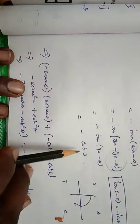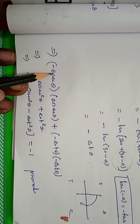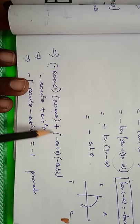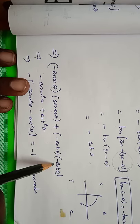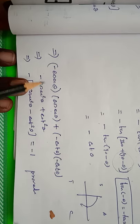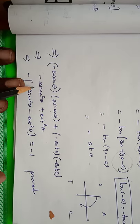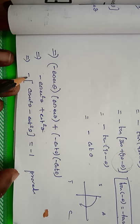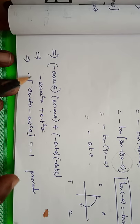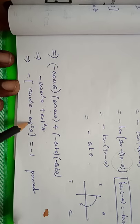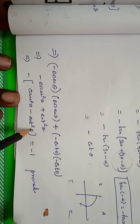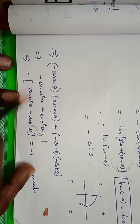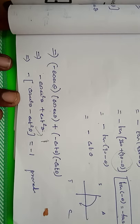Combining the results: the first term is −cosec θ, the second is cosec θ, the third is −cot θ, and the fourth is −cot θ. Multiplying: (−cosec θ)(cosec θ) + (−cot θ)(−cot θ) = −cosec²θ + cot²θ = −(cosec²θ − cot²θ). Using the identity cosec²θ − cot²θ = 1, the result is −1 × 1 = −1. Hence proved.